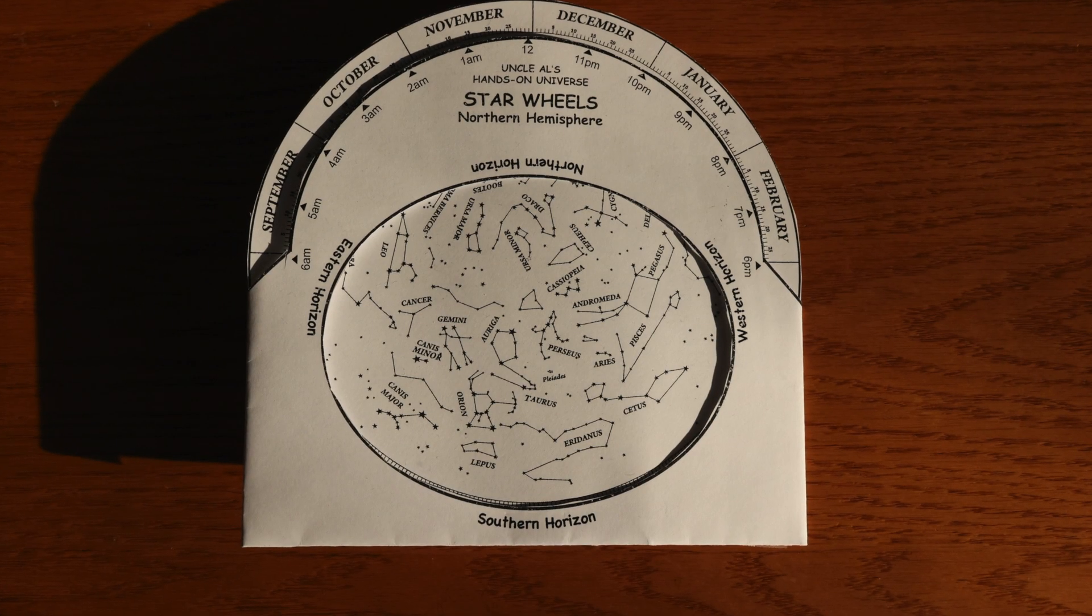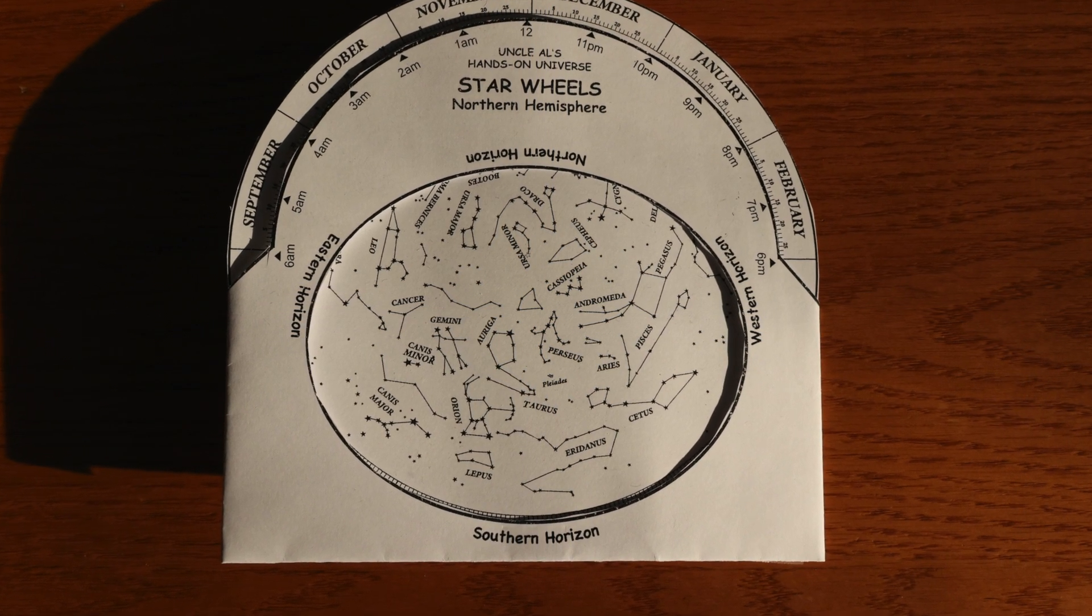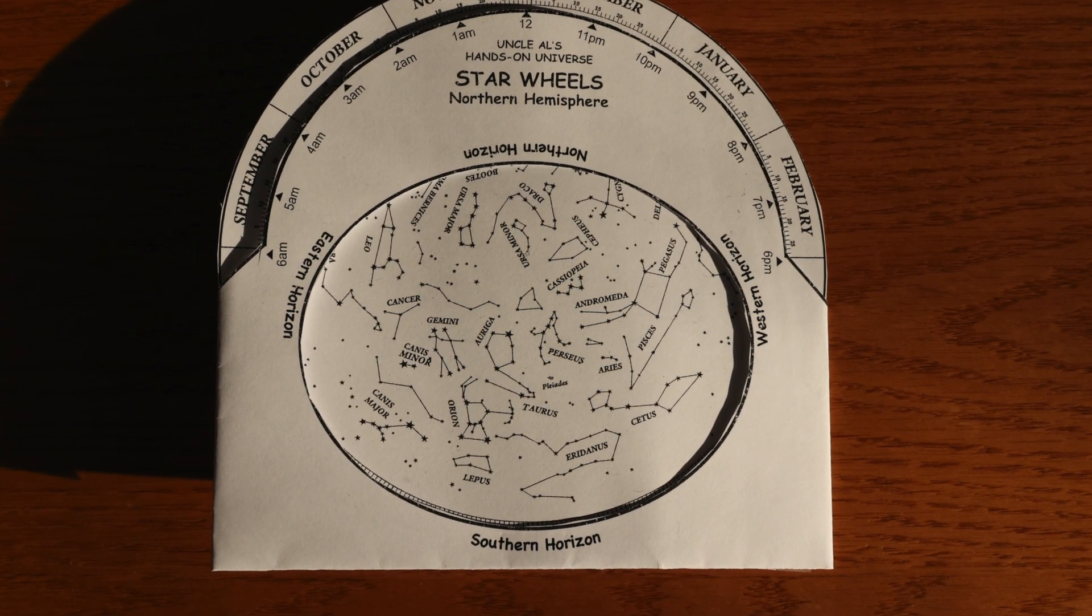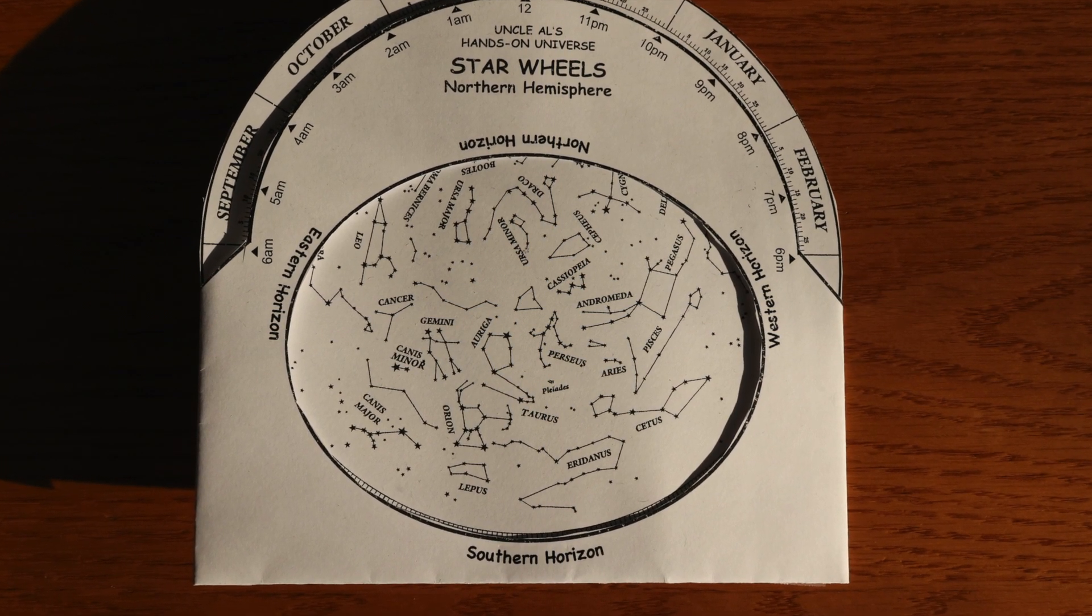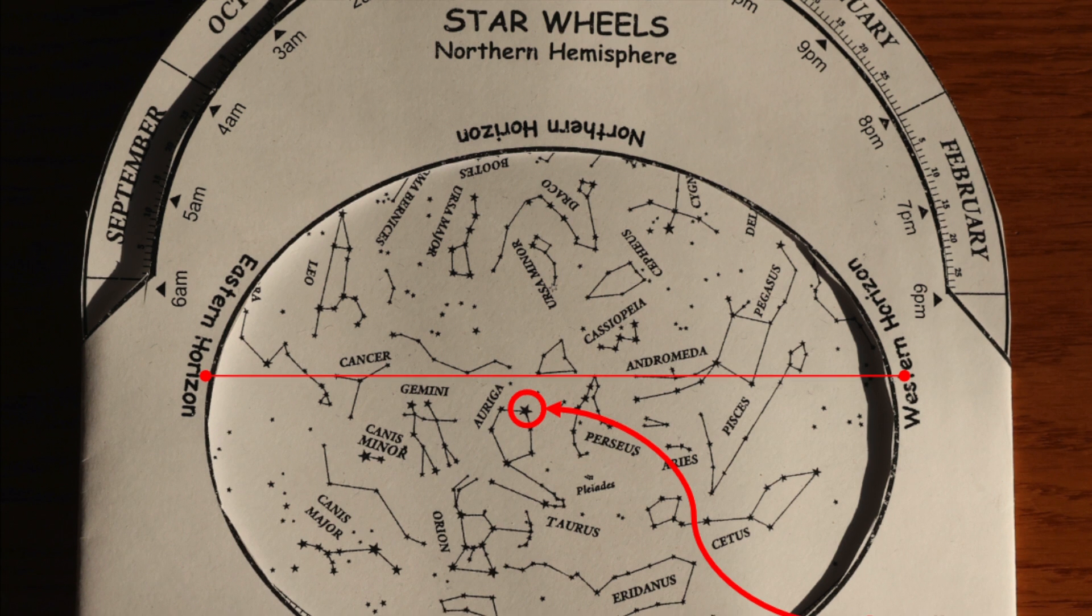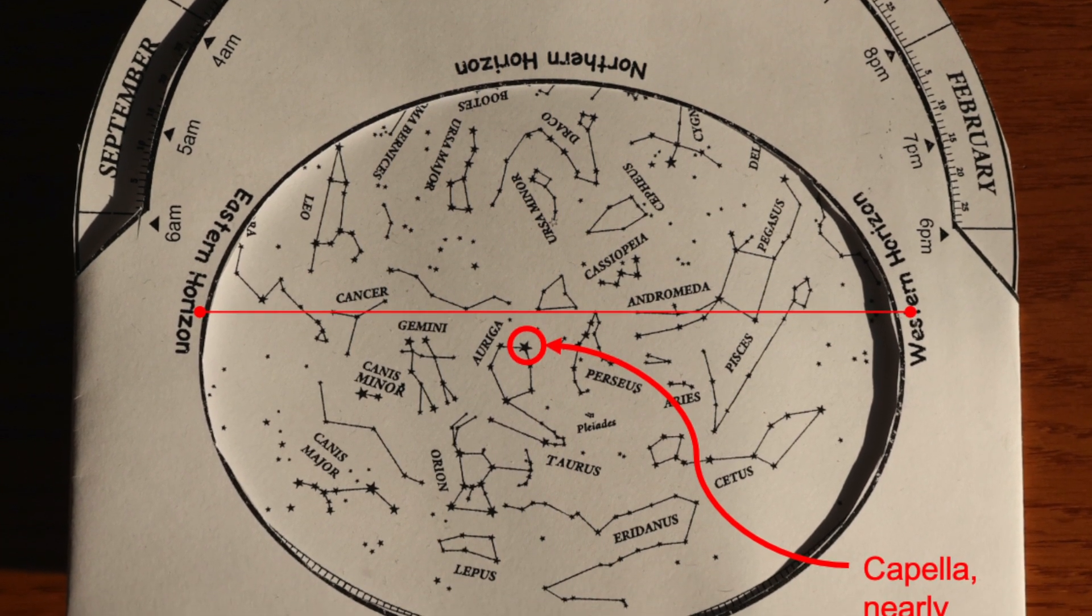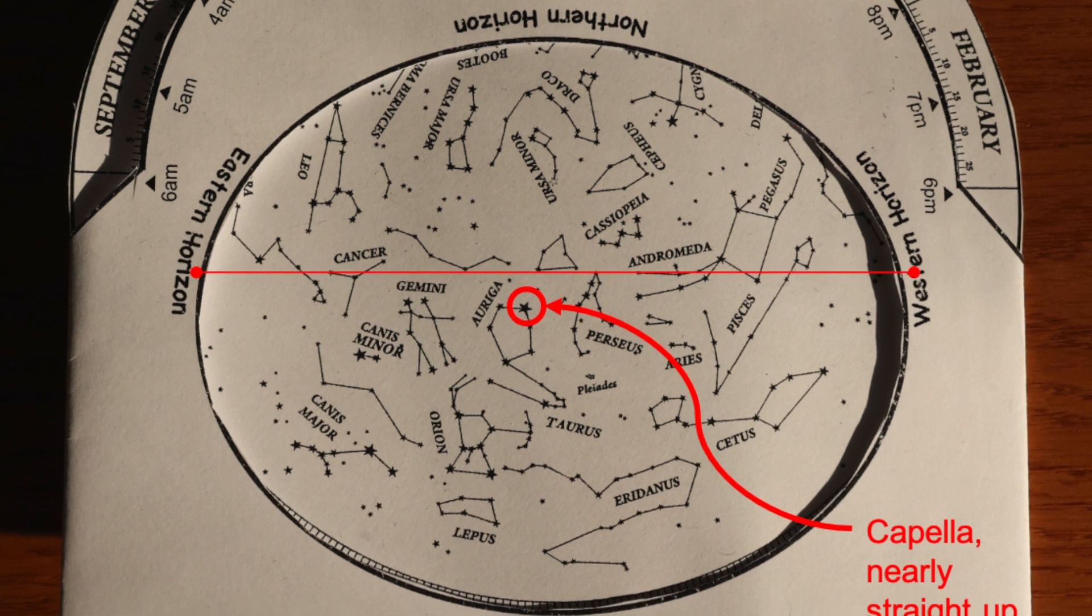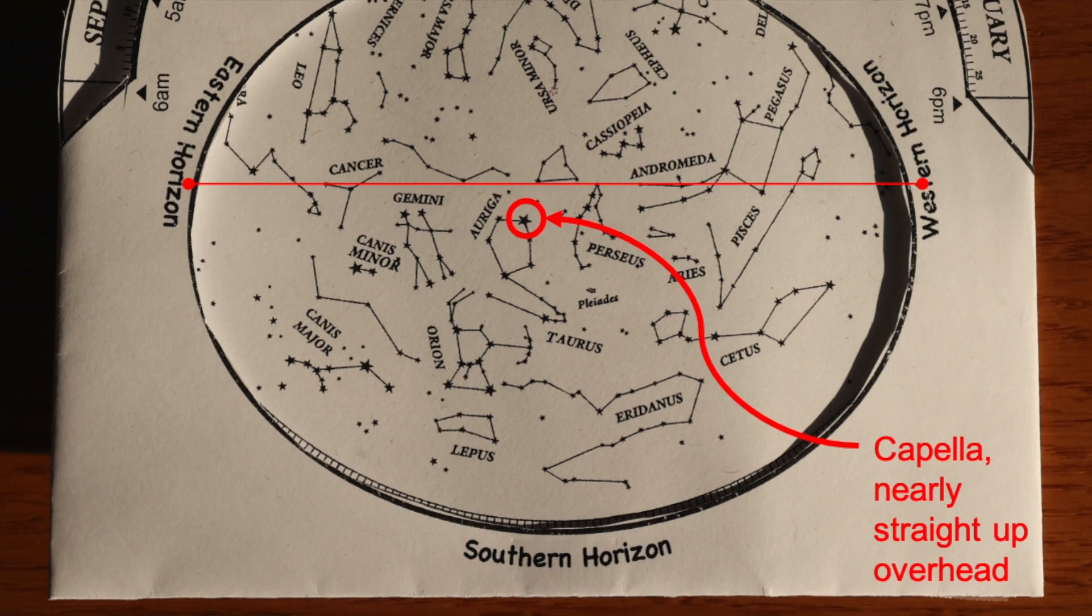All right, now while we wait for it to get dark, let's look at the planisphere and pick something to try to find. Let's pick a bright star because they're easier to find. On the star map, the bright stars are big, and the dim stars are really tiny. It looks like at 7 o'clock tonight, almost straight up overhead there's going to be a really bright star in the constellation Auriga.